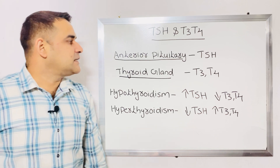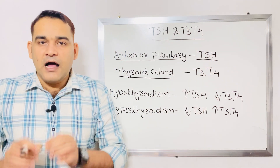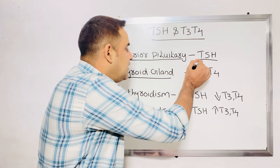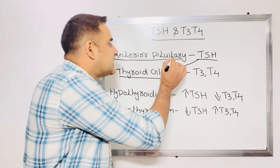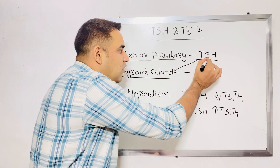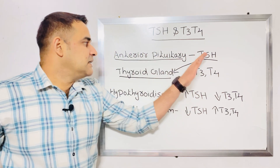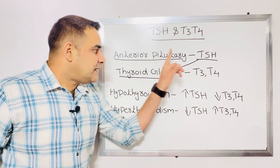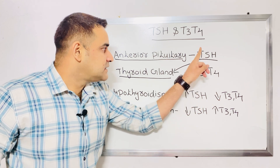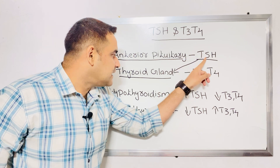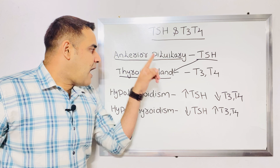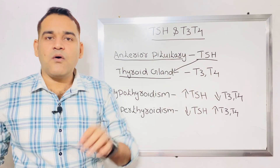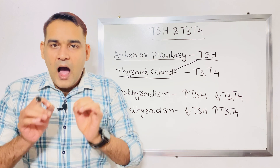Regarding the function of TSH — the thyroid stimulating hormone — its function is to stimulate the thyroid gland. The anterior pituitary gland secretes TSH, TSH stimulates the thyroid gland, and after getting that stimulation, the thyroid gland secretes T3 and T4. Now regarding hypothyroidism and hyperthyroidism.